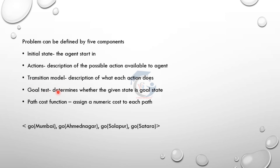Fourth, goal test — determines whether the given state is a goal state. If you go on the route, you will find the goal state and reach it. Fifth, path cost function — assigns a numeric cost to each path. If you go on the route, you will find the goal state; that is the path cost function.